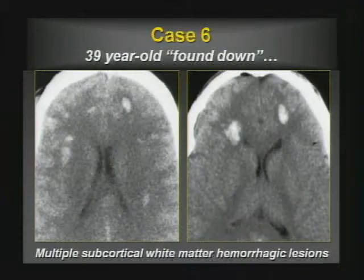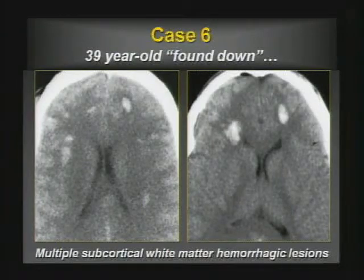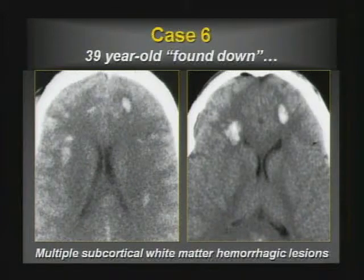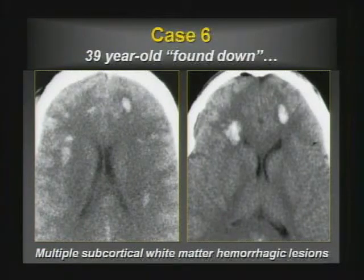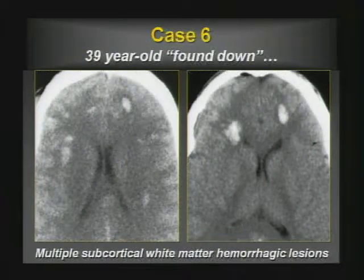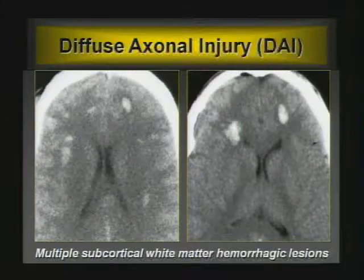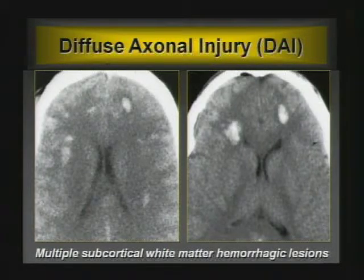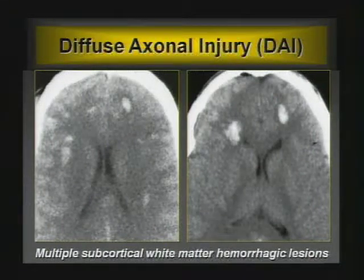Case five: multiple subcortical white matter hemorrhagic lesions with a little edema. The history is key here. If this was a high-speed MVA, one would think about diffuse axonal injury. If not a high-speed MVA, you'd have to think about other causes of multiple subcortical white matter hemorrhagic injuries, such as septic emboli, metastases, or specifically hemorrhagic metastases like melanoma.